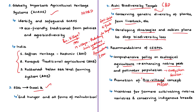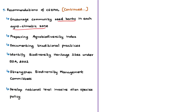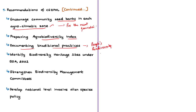One CEPPOL recommendation is providing incentives to farmers cultivating native land-raised varieties and those conserving indigenous breeds of livestock and poultry varieties. The next recommendation is encouraging community seed banks in each agro-climatic zone — a place where seeds are collected and stored to save the regional biotic properties of plant varieties, which can be used by new generations of farmers for growing traditional crops. Another recommendation is that an agro-biodiversity index needs to be prepared and traditional practices documented through people's biodiversity registers, and identifying biodiversity heritage sites under the Biological Diversity Act of 2002.